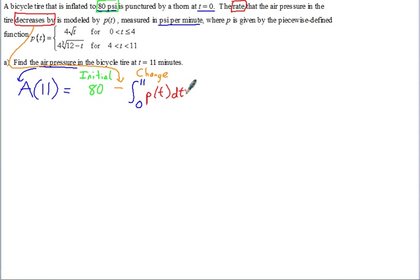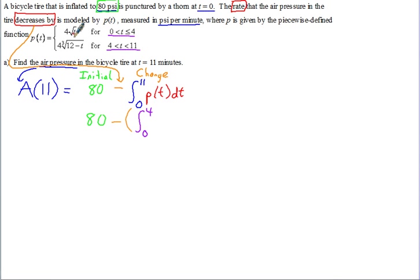This is the first time we've run into a case where the rate of change or derivative is a piecewise function. From 0 to 11, that covers both pieces. We can set this up as 80 minus, then split it: the first piece applies from 0 to 4, and that piece is 4 times the square root of t. Then we add the integral from 4 to 11, and the other part of the function that applies there is 4 times the cube root of 12 minus t.